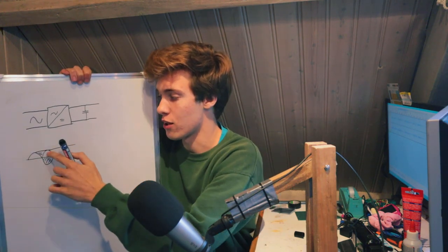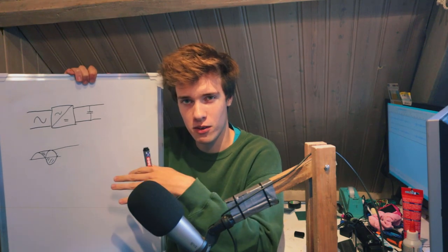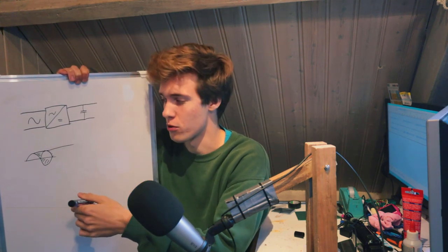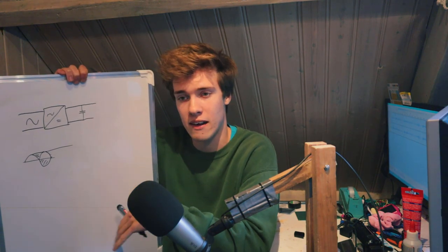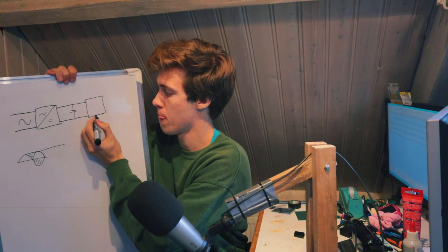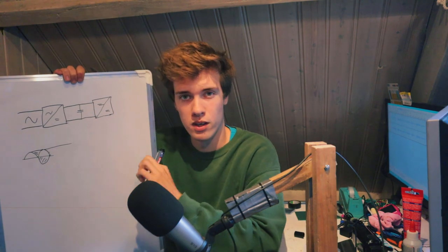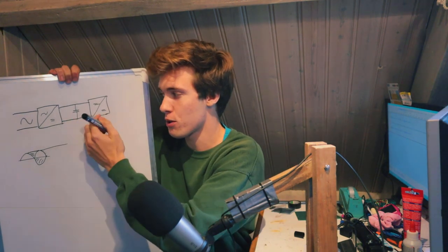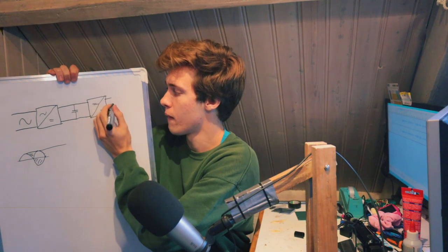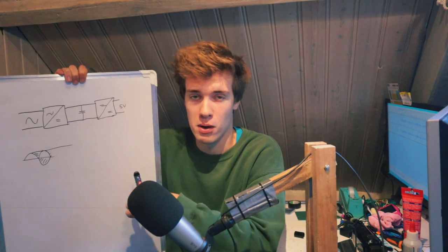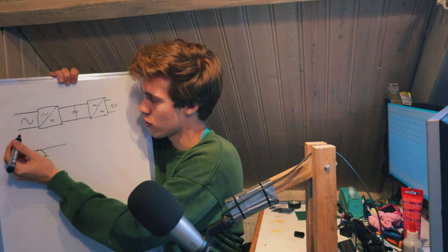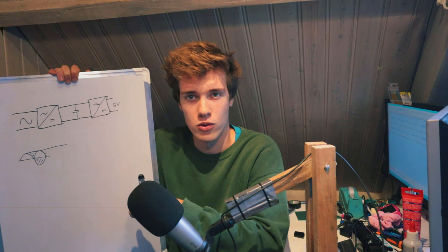So we're almost there. We've converted our AC into a nice flat DC. But the final thing that we haven't done yet is we haven't checked the magnitude of this DC. It could still be 10 volts or 15 volts. It's still probably going to be too high to feed into our phone. So finally, we also add a DC converter to change that voltage down to five volts. It's going to take whatever we feed in and turn that into right about five volts.